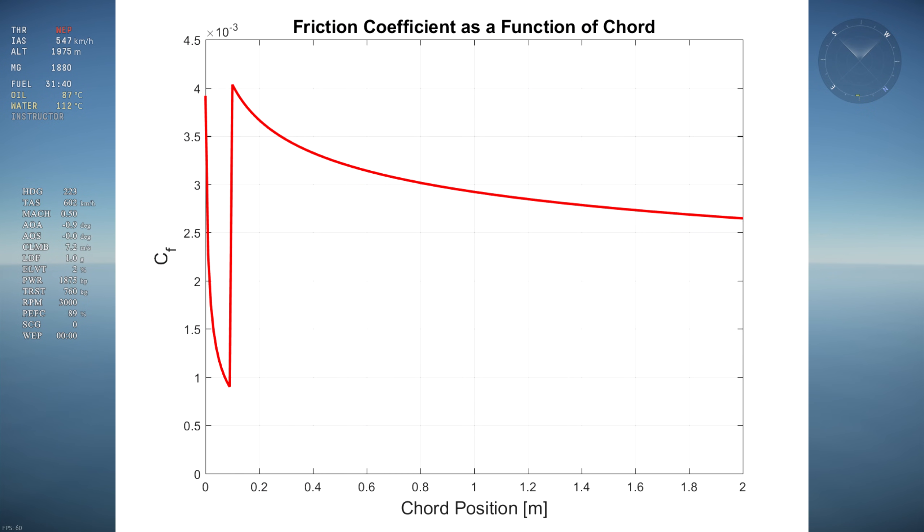We notice the transition from laminar to turbulent flow by the sudden increase in skin friction coefficient at 5% of the chord, which is 0.1m on this graph.